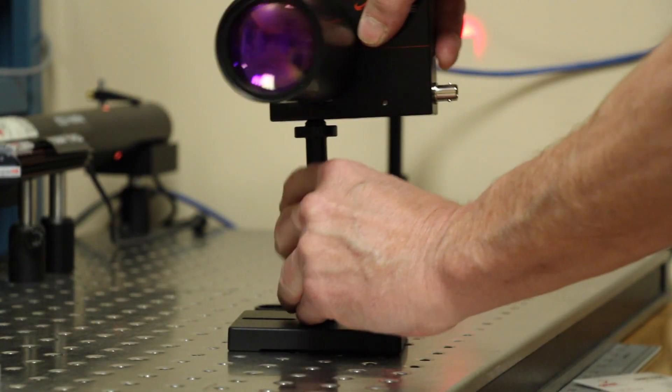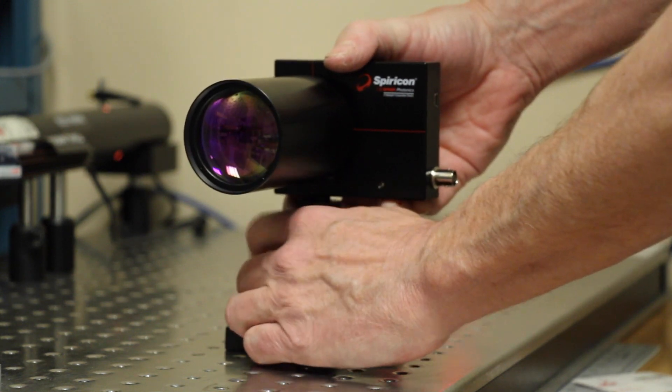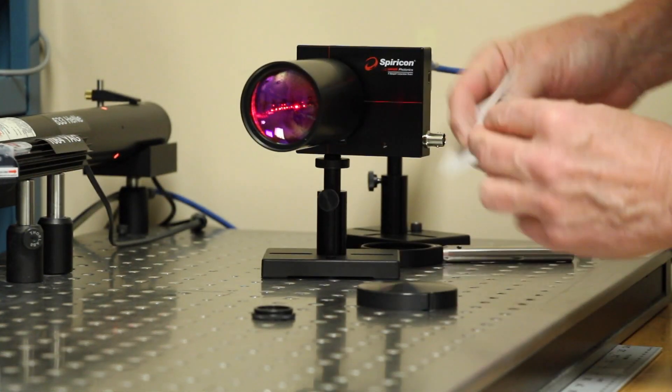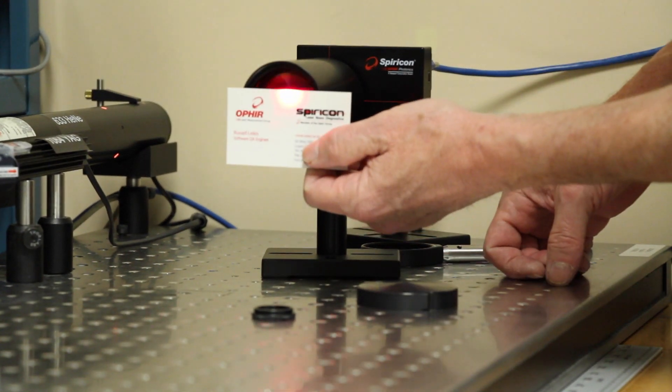For instance, when used with the SP620, the 4x beam reducer provides an active area of 28 by 21.2 millimeters.